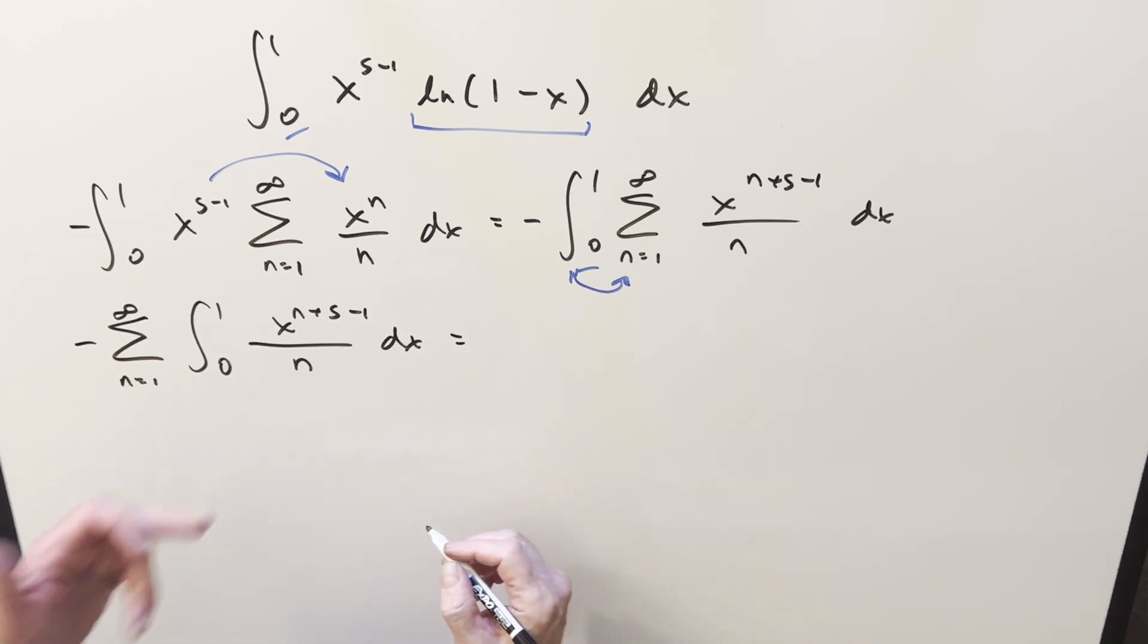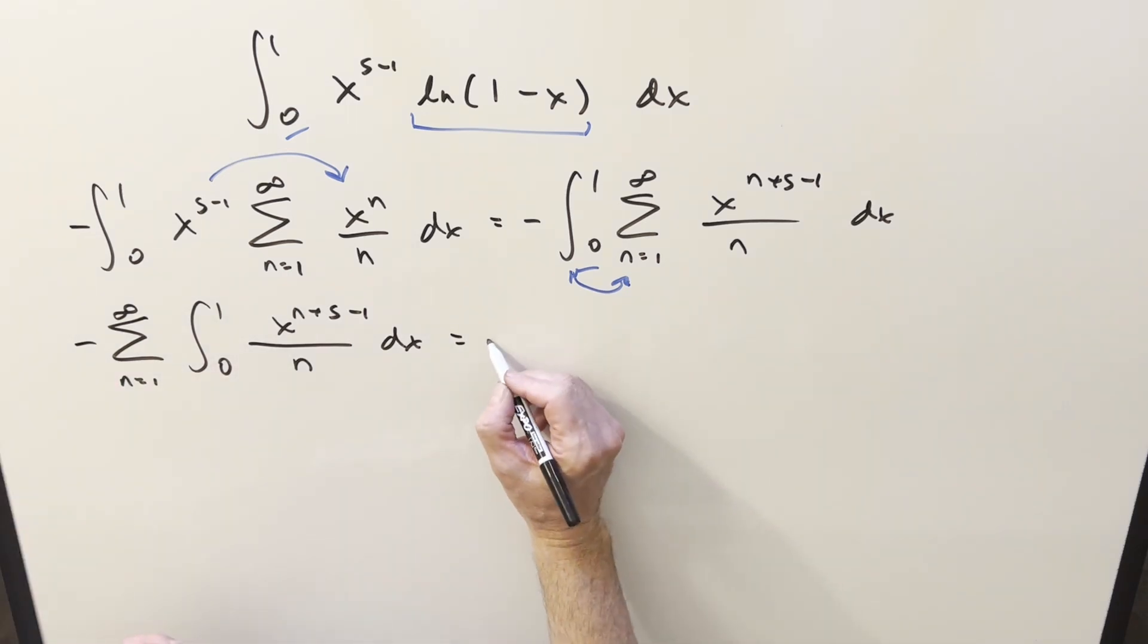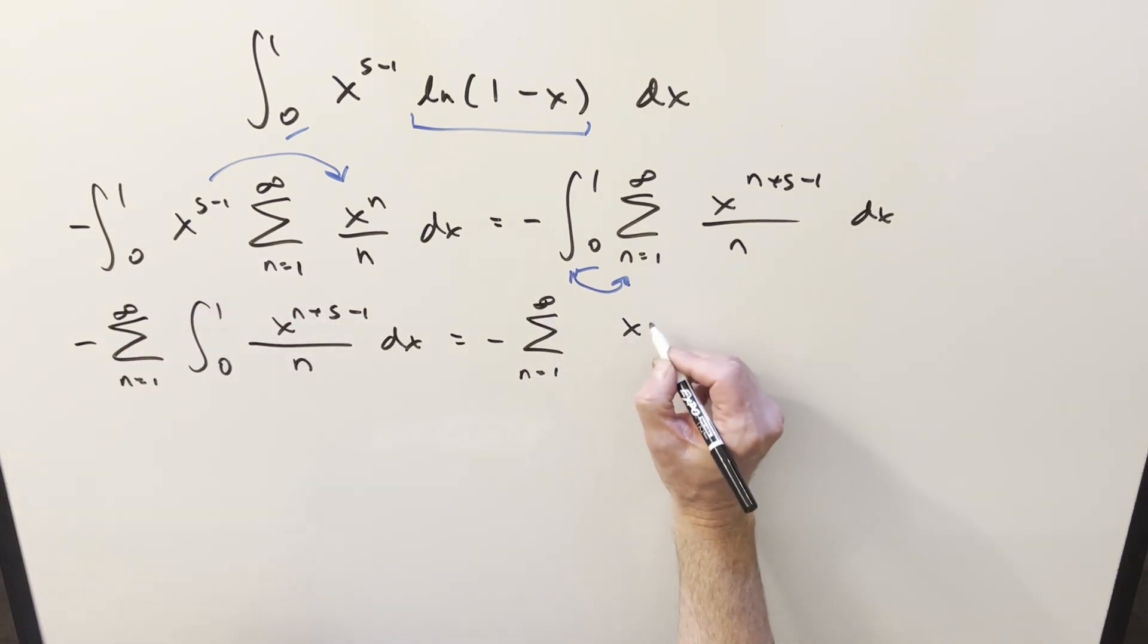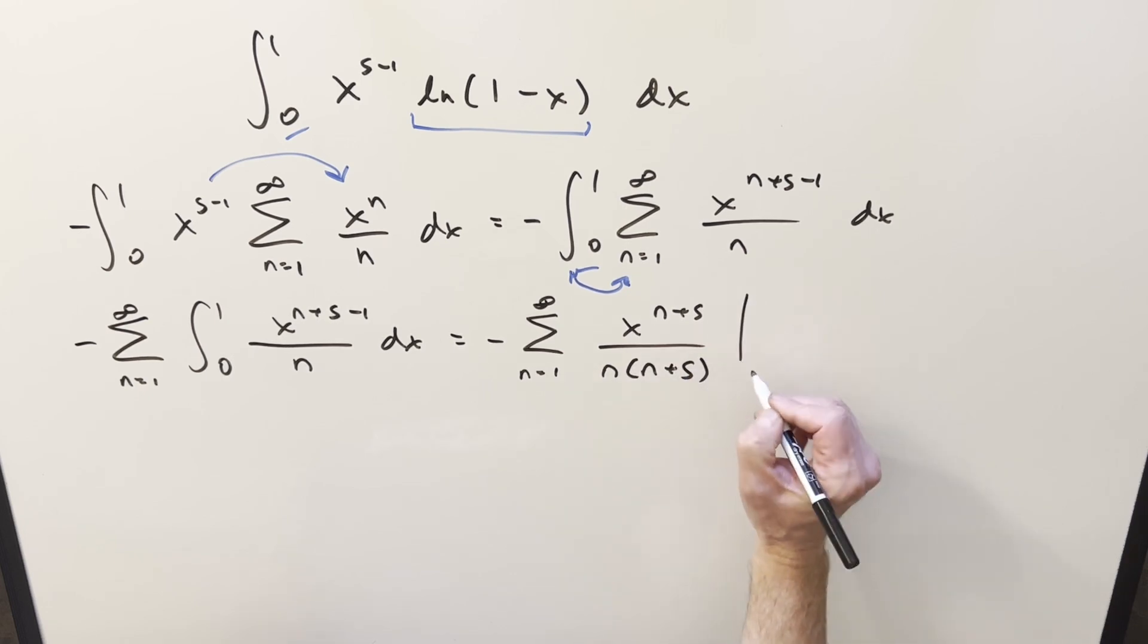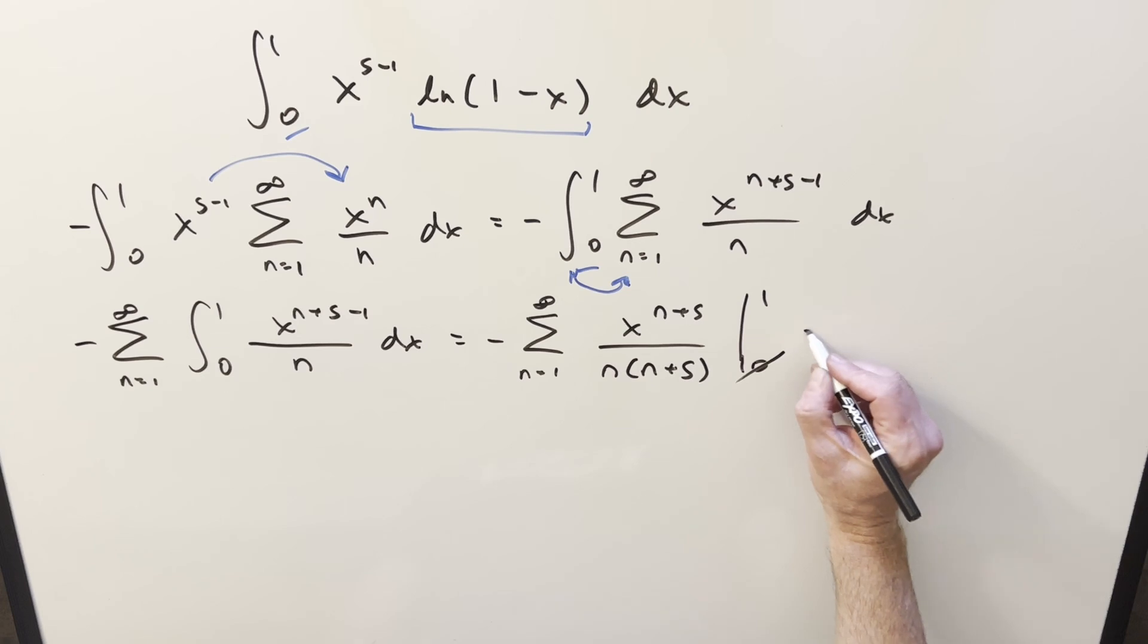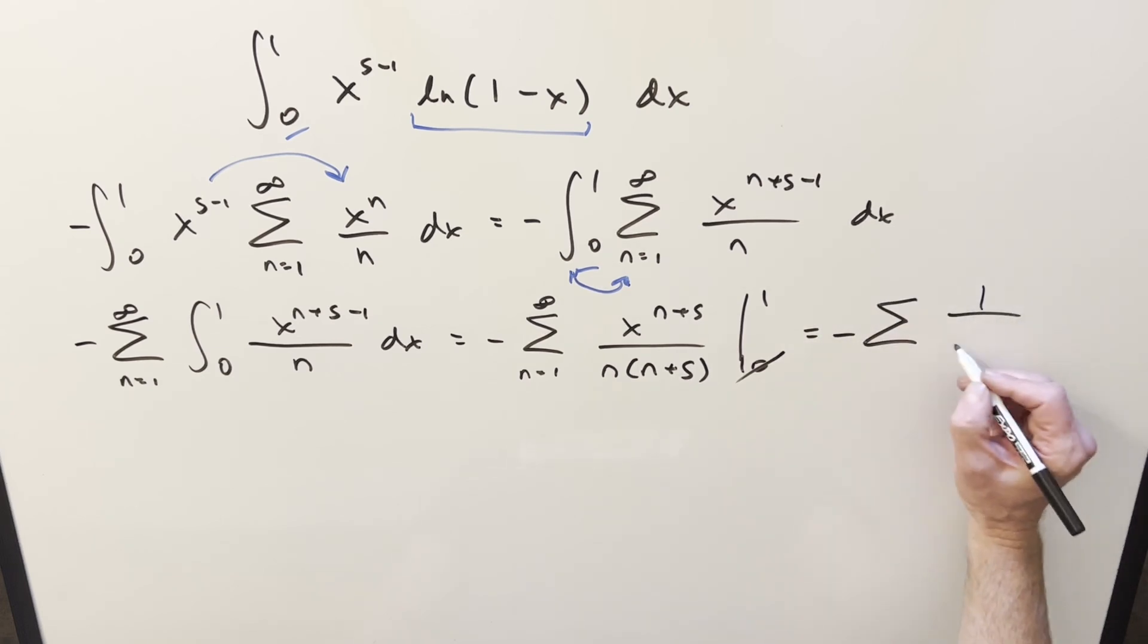We can do it. We have the convergence that we established on the previous board. But then we can just go ahead and integrate this. This is just going to be power rule. n's just a constant. So we're going to have this all within our sum. Then integrating, we just need to add 1 on the power here. So this is going to be x to the n plus s over n times n plus s evaluated from 0 to 1. Evaluating at 0, that's just going to all be a 0. You plug in a 1, the exponent's not going to matter. So this whole thing is going to reduce down to this sum of just 1 over n times n plus s.